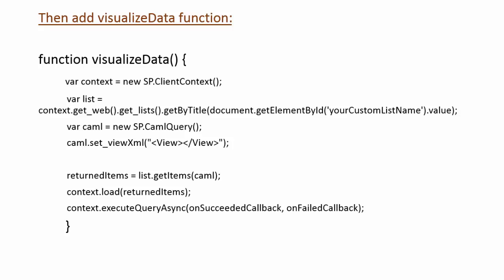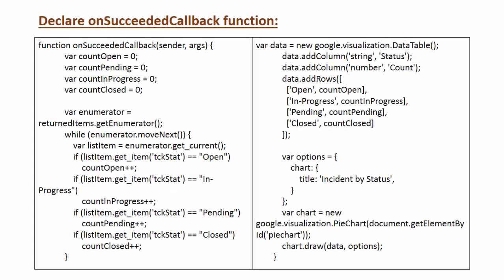After that, I execute the executeQueryAsync method. If everything succeeds it will call the onSucceeded callback; otherwise it calls the onFailed callback. In the onSucceeded callback I basically count variables for every status: Open, Pending, In Progress, and Closed. I use a while loop with an enumerator, and enumerator.moveNext() moves from record to record, counting how many times each particular status ticket appears in the list.